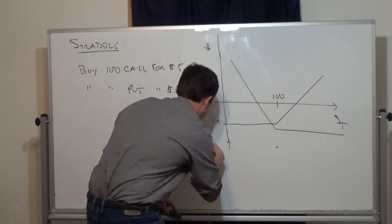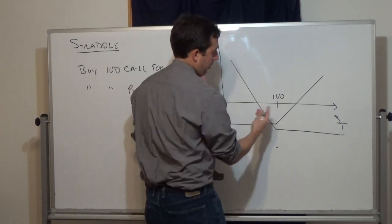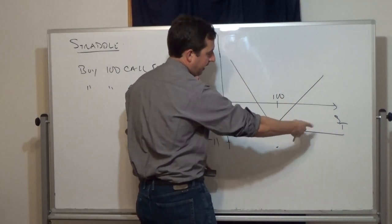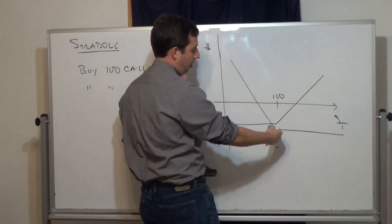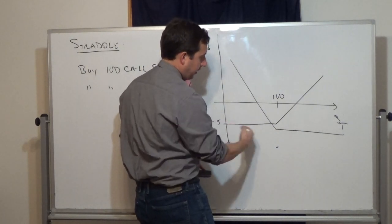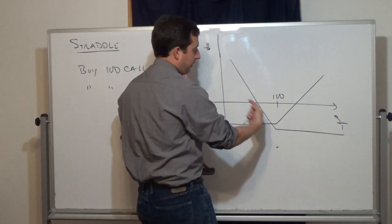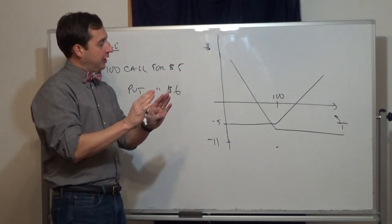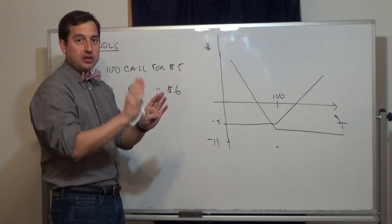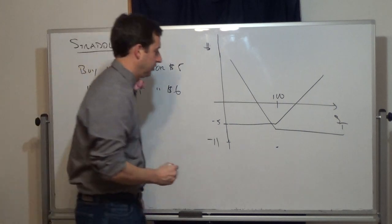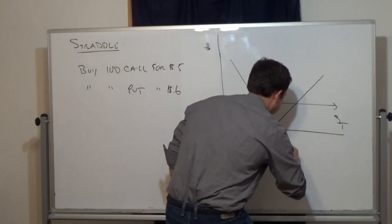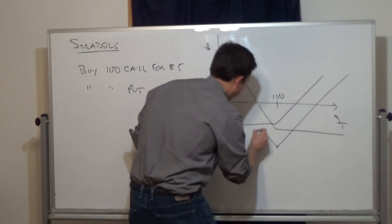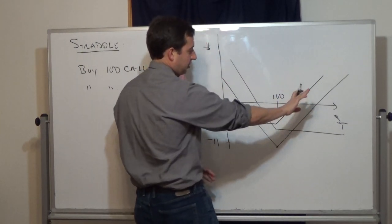Above $100 the put has no effect and we make it all on the call. Below $100 the call has no effect and we make it all on the put. In other words, our profit increases by a dollar in both directions, so the straddle looks like a V-shape.